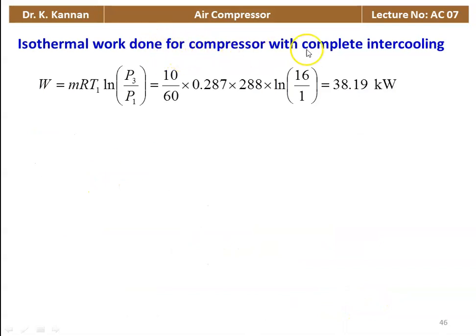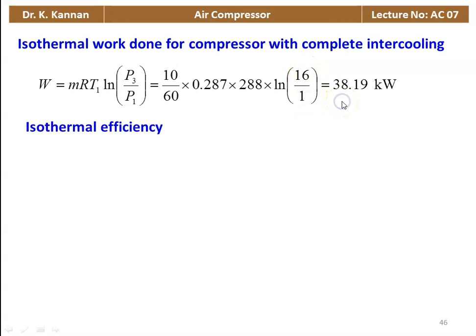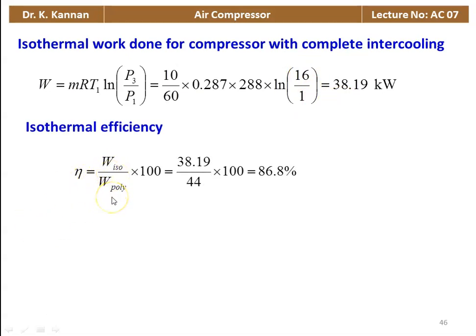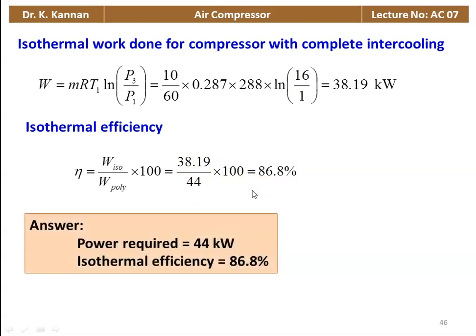Isothermal work for the compressor with complete intercooling: W_iso = MRT1 × ln(P3/P1) = (10/60) × 0.287 × 288 × ln(16/1) = 38.19 kilowatts. Isothermal efficiency = (isothermal work / polytropic work) × 100 = (38.19 / 44) × 100 = 86.8%. So the power required = 44 kW and isothermal efficiency = 86.8%.